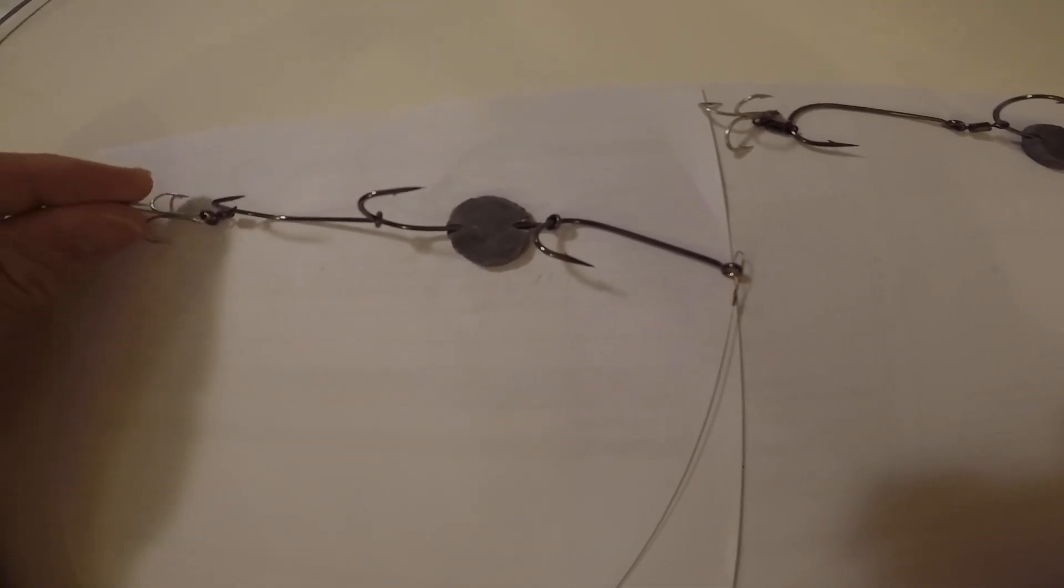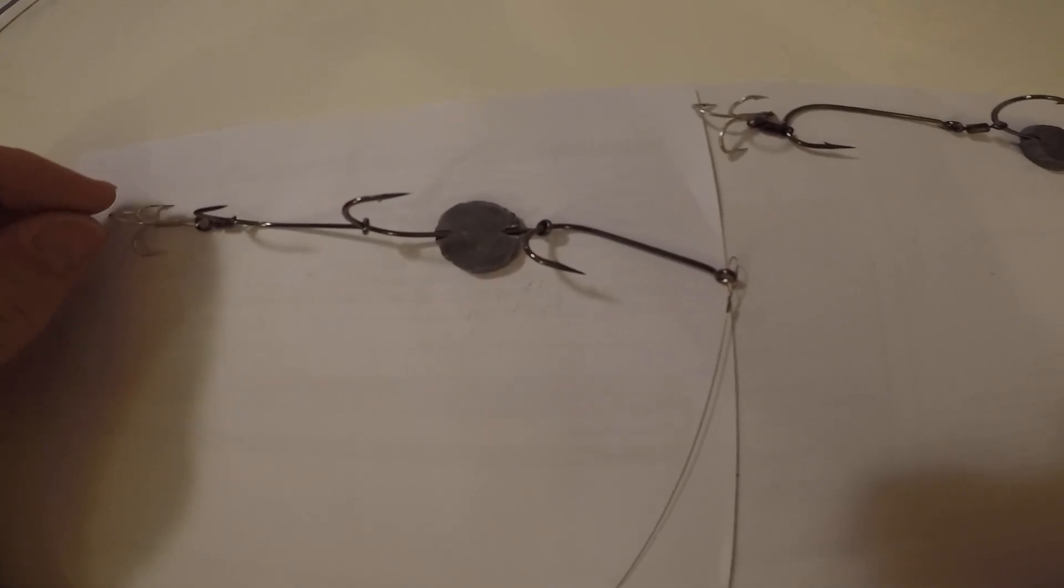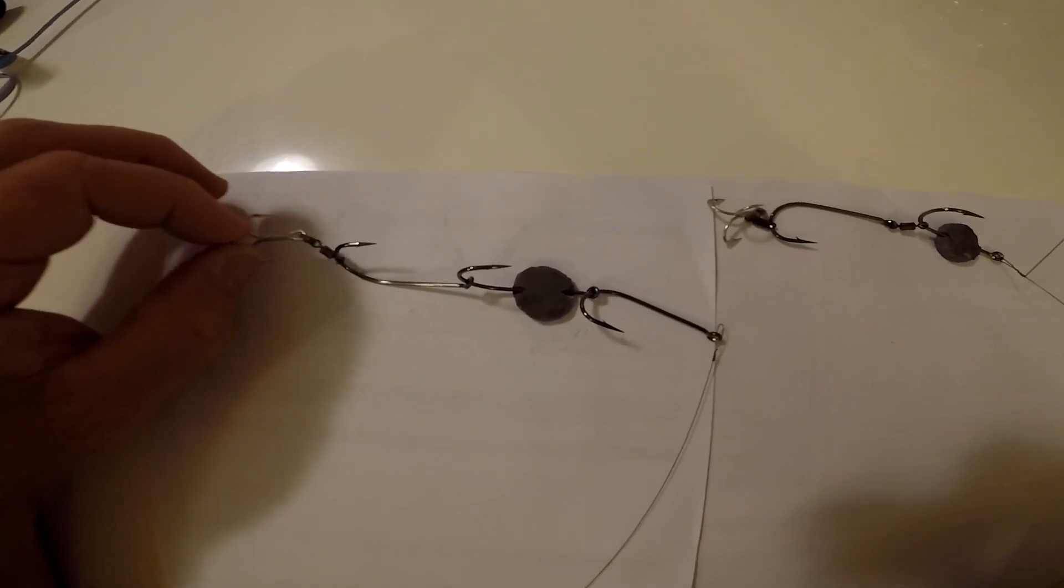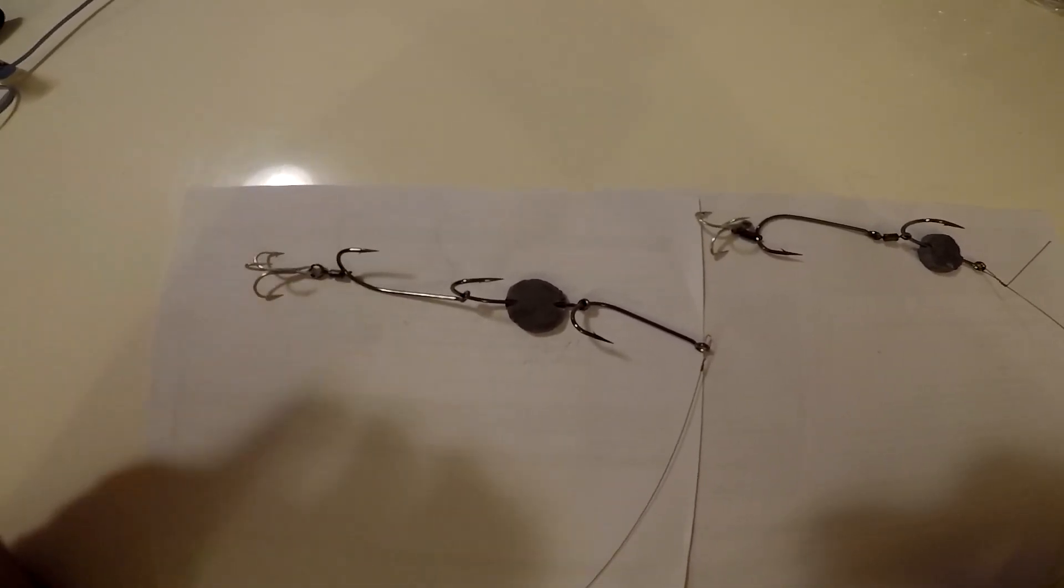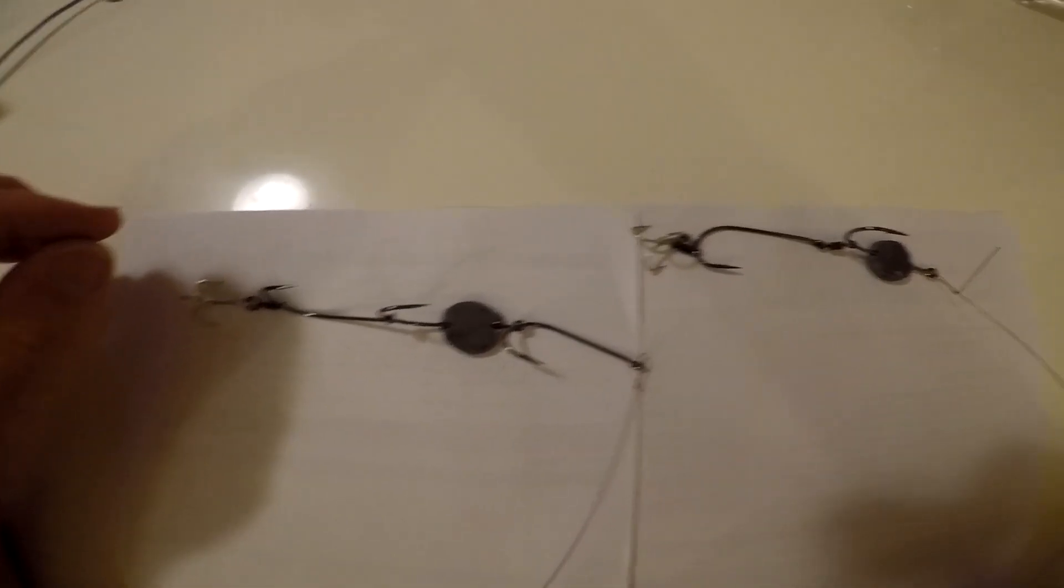I like the stinger at the back here. If they just side-swipe it you've got something sticking out because all these other hooks are in the bait. So I like that. If they come and bite the tail off then again, hopefully they get hooked with that.